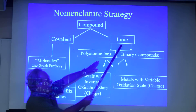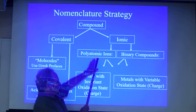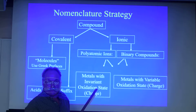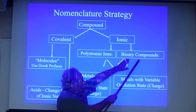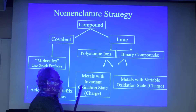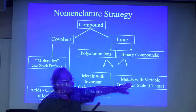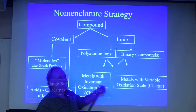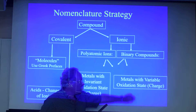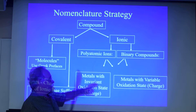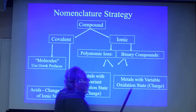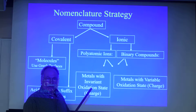If it's ionic, then you ask yourself: does it have polyatomic ions or binary compounds — between two types of elements or more than two types? You also have to look at the metal: does the metal have more than one charge state? That is, is it a variable oxidation state, or does it have only one charge state? And all over here, we use the principle of charge neutrality.